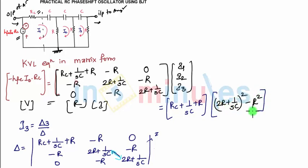These two multiplied by these two, so 0 into R will be 0, so you are left with minus R into [2R plus 1/(sC)]. So for simplification, I am writing the equation again.